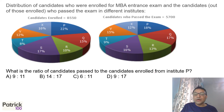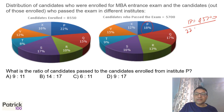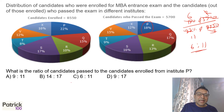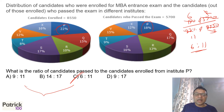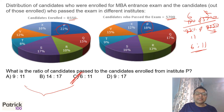What is the ratio of candidates passed to candidates enrolled from Institute P? Passed is 18% of 5,700, enrolled is 22% of 8,550. We had calculated 2 upon 3 earlier, giving 2 into 18 upon 3 into 22, which simplifies to 6 is to 11. You can also reason that since 22 is present, the second number must be a multiple of 11. Since 5,700 is smaller than 8,550 and 18 is smaller than 22, the first must be smaller, so 9:11 is not possible — 6:11 is the answer, C option.